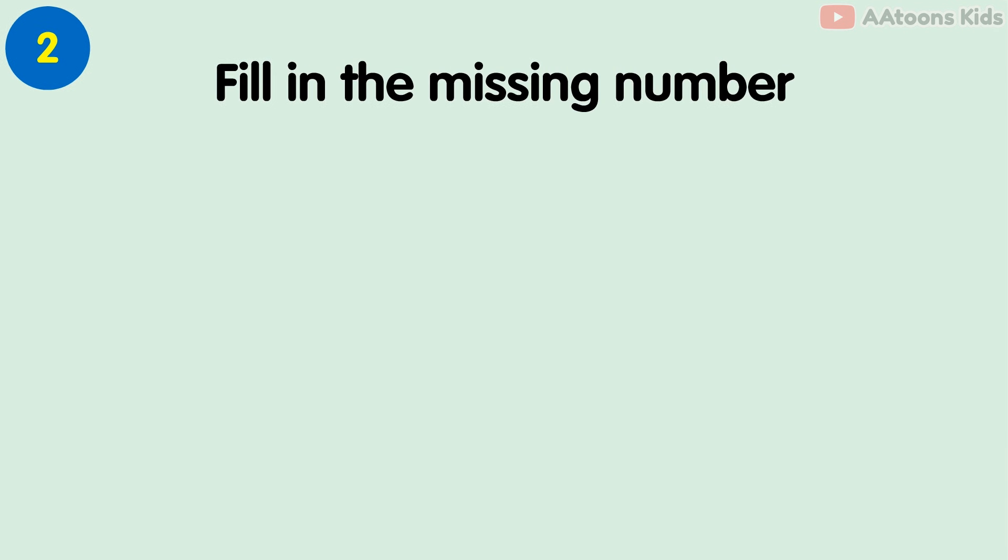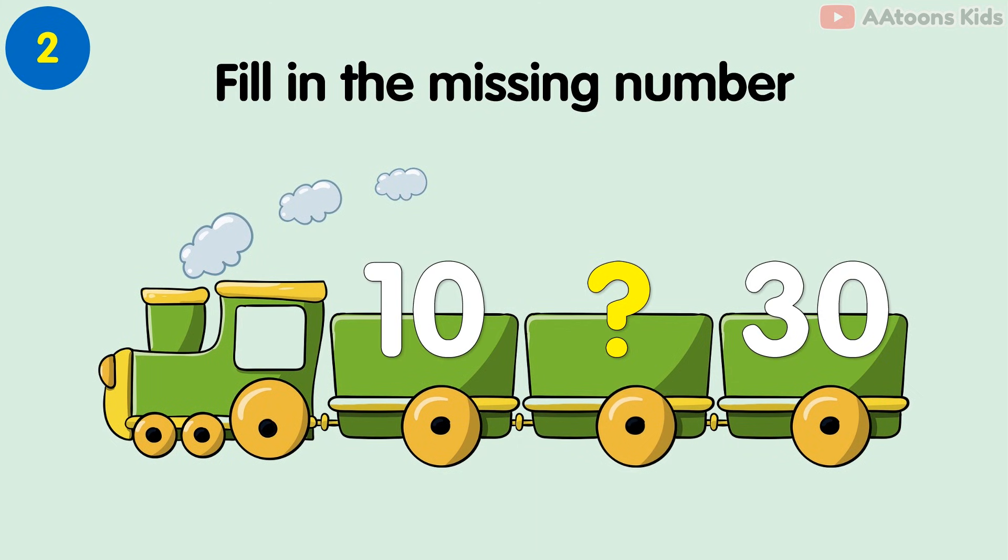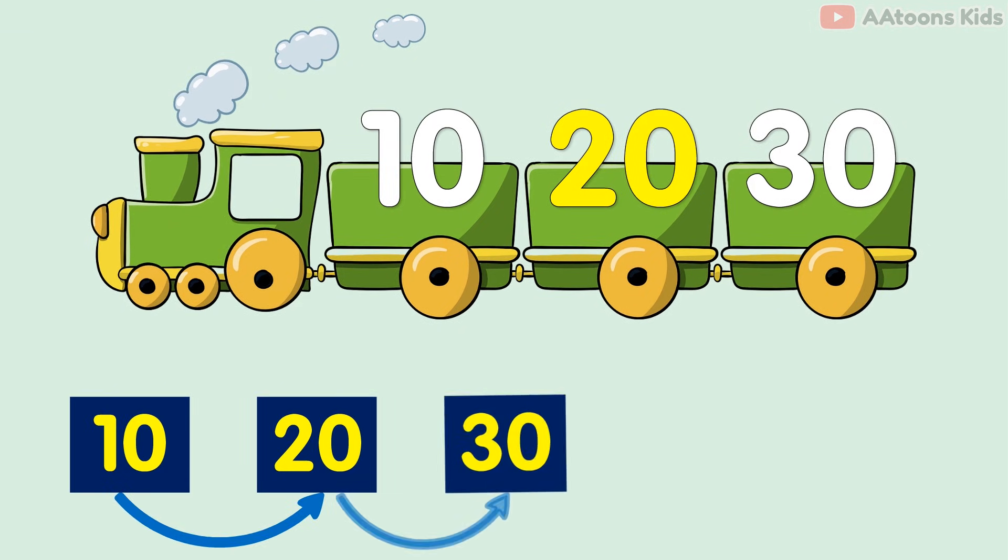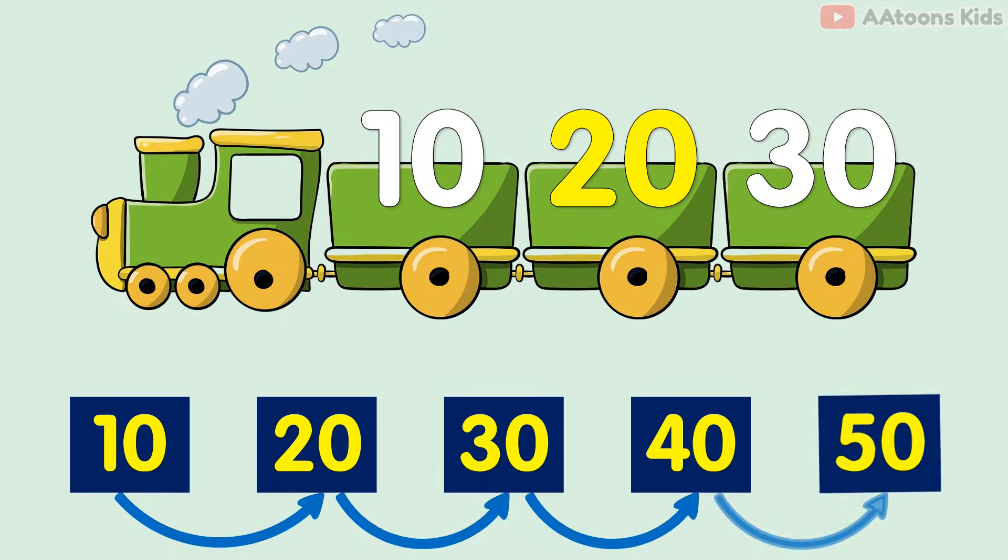Fill the missing numbers. 20. The differences between numbers are 10. So, order of the numbers are 10, 20, 30, 40, 50.